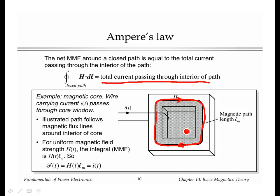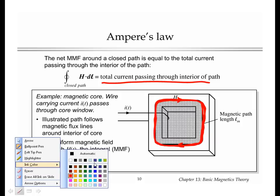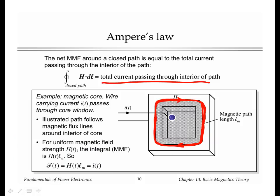Here the path is taken to be the path that an average flux line takes around the inside of the core. The interior of the path then is the current that passes through the hole in the middle of the core, or what we call the window of the core.